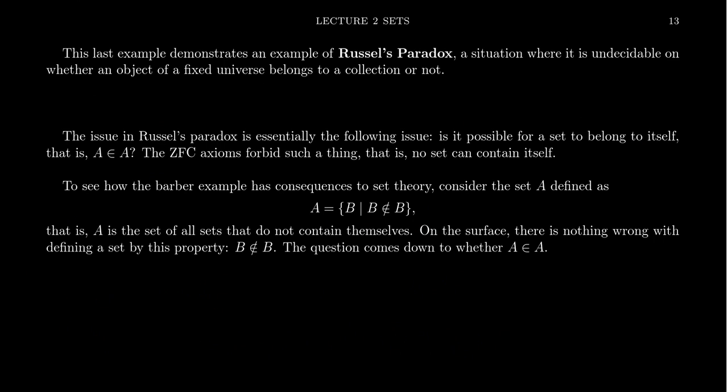This is an example of what we refer to as Russell's Paradox. Russell's Paradox is a situation where it is undecidable whether an object of a fixed universe belongs to a collection or not. Our fixed universe was the men in town — we can't decide whether the barber belongs to the collection of people whose hair the barber cuts. Because of his literal interpretation of his motto, we can't actually decide whether the barber should belong to it or not. The discovery of Russell's Paradox was a great controversy in early set theory, because Russell showed that sets may not always be well-defined.